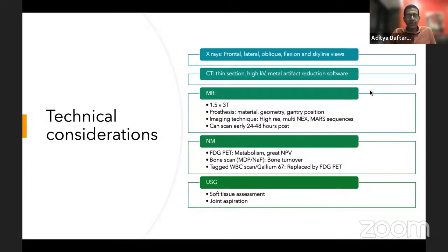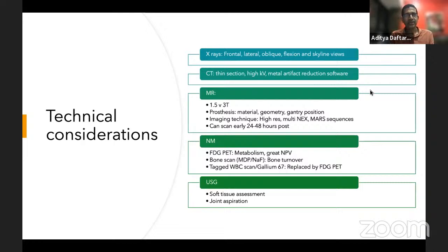Some technical considerations: radiographs you are all aware of. With arthroplasty, more than routine radiography, we want obliques and other angled views to look at structures from different angles and see rotation. When it comes to CT, it's a great tool, but because there's metal there can be a lot of streak artifact. The artifact varies based on materials, and we reduce it by increasing the kV and using metal artifact reduction software, as well as doing very thin section images.